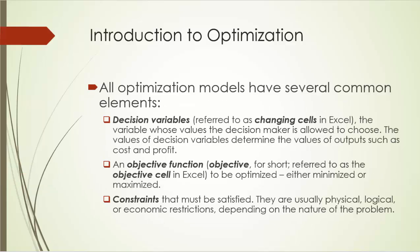All optimization models have several common elements in addition to inputs and outputs mentioned in Lecture 1. They are decision variables, objective function, and constraints.